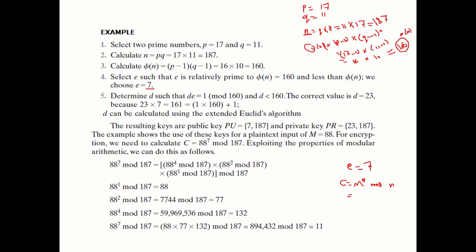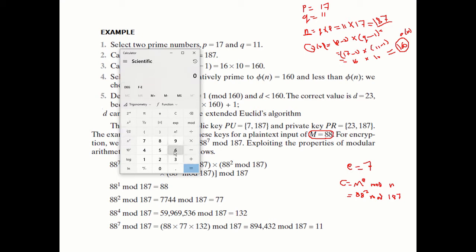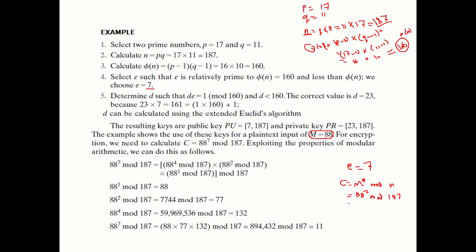Let's say the message M = 88. The ciphertext C = 88^7 mod 187. Using a calculator: 88 to the power 7 gives a big number, and taking mod 187 gives C = 11. So the encryption of 88 is 11.